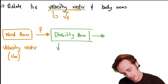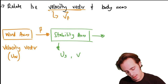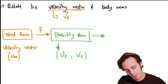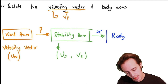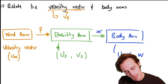In stability axes I have U_S and V_S (and W_S). I then rotate through the angle of attack to go into body axes. Once in body axes, we have U, V, and W — when there's no subscript, we know we're in body axes.